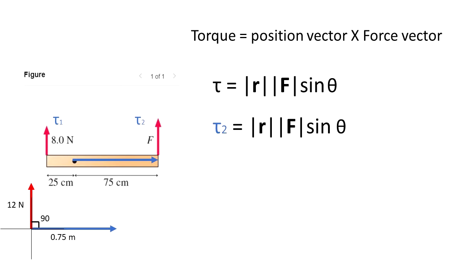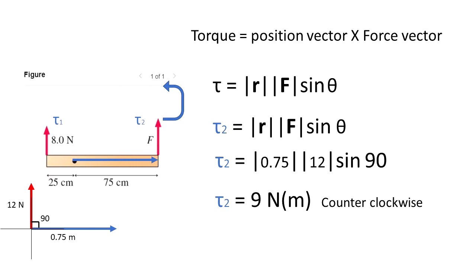Applying the definition, torque 2 is equal to 0.75 meters times 12 newtons times sine of 90 degrees. And this is equal to 9 newton meters. This is going to be in the counter-clockwise direction.